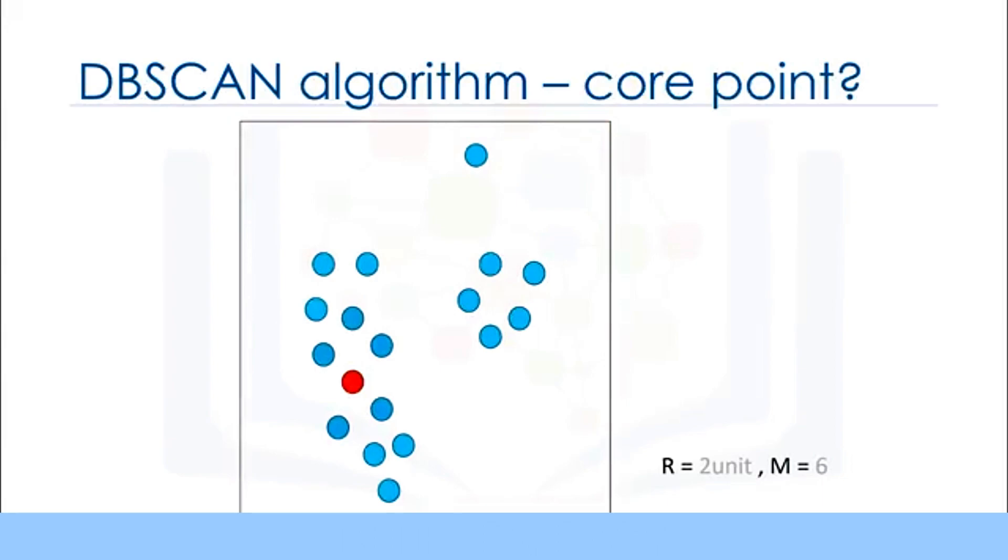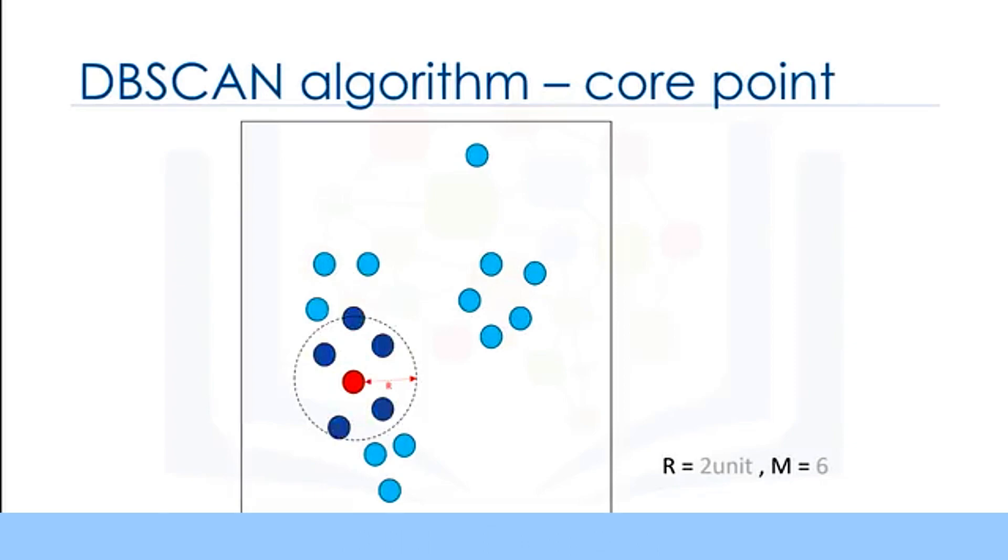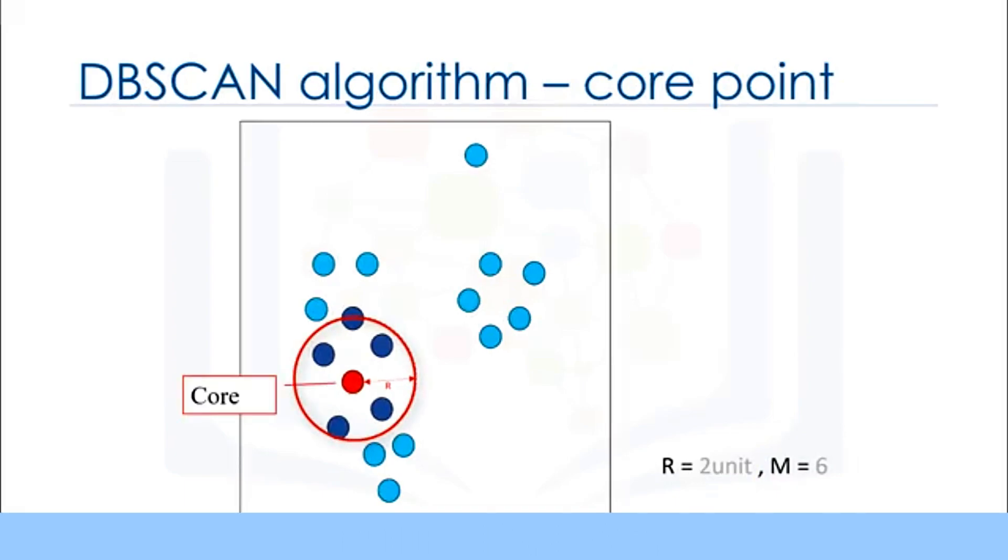Let's pick a point randomly. First, we check to see whether it's a core data point. So, what is a core point? A data point is a core point if, within our neighborhood of the point, there are at least M points. For example, as there are six points in the two centimeter neighbor of the red point, we mark this point as a core point.